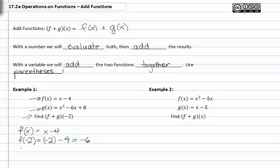We also are given g, which we know is x squared minus six x plus eight. And we're going to evaluate g of negative two.